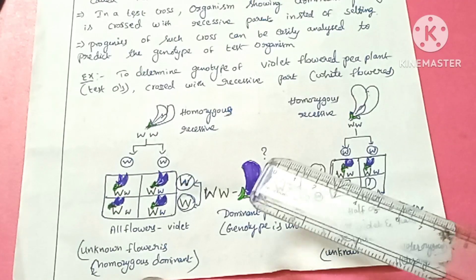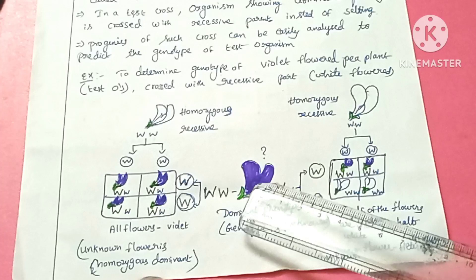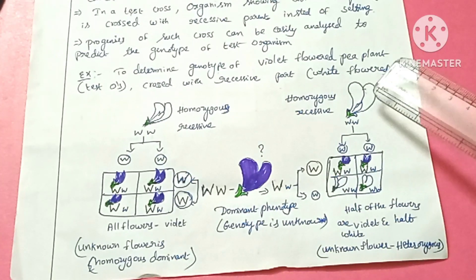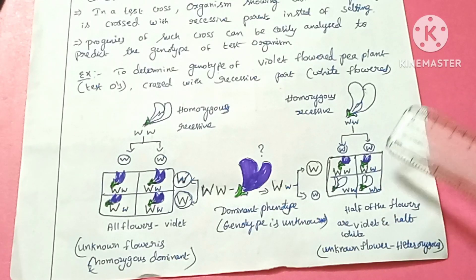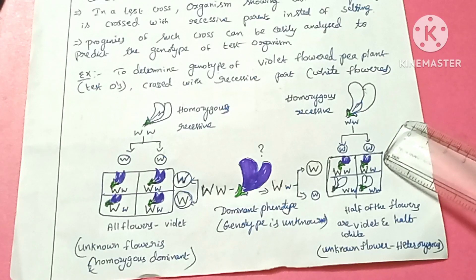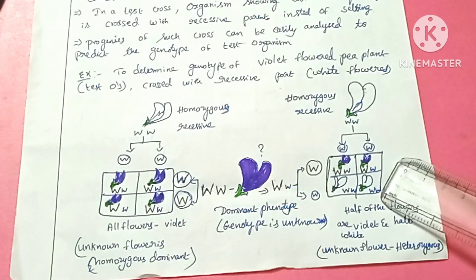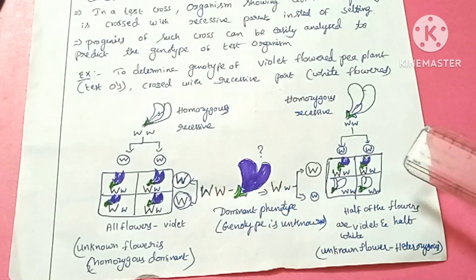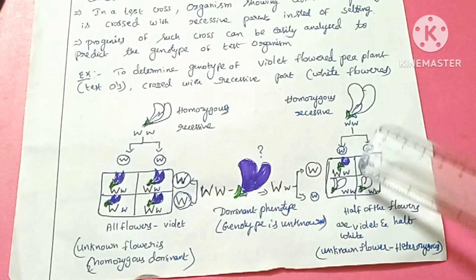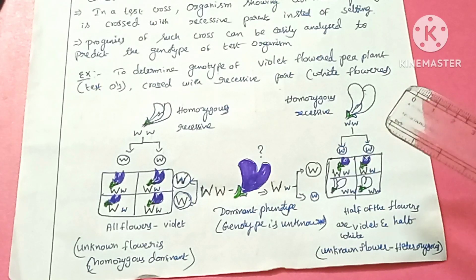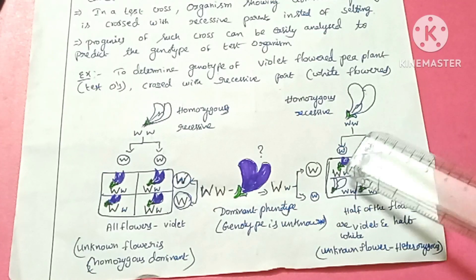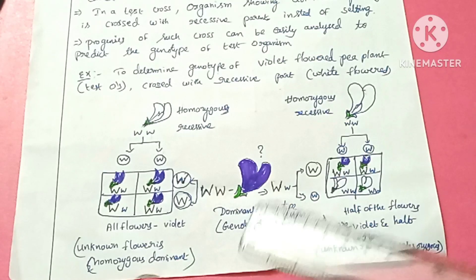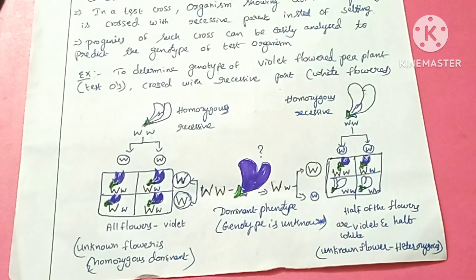In the second case, the test organism is a violet color flower plant that is heterozygous. When crossed with the homozygous recessive plant, half of the progeny produce violet color flowers and half produce white color flowers. So the phenotypic ratio is 1 to 1, a 50-50 chance. We predict that the unknown plant is heterozygous.